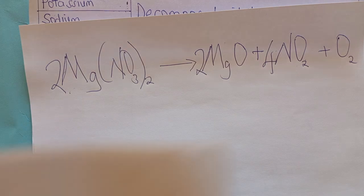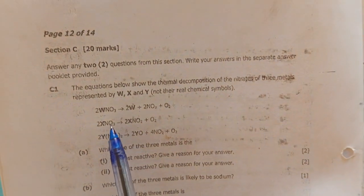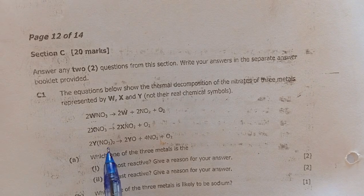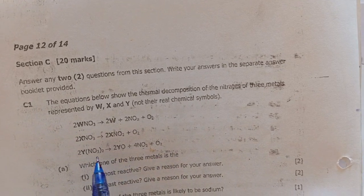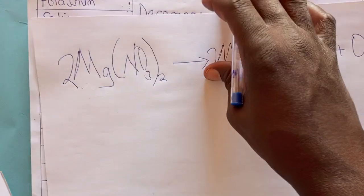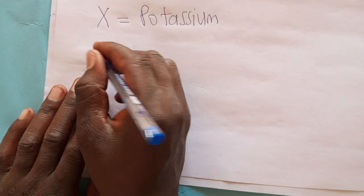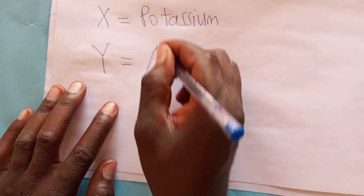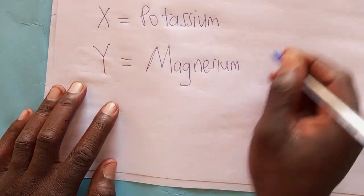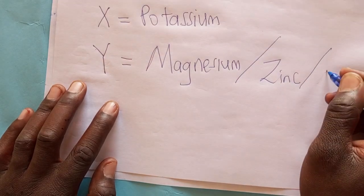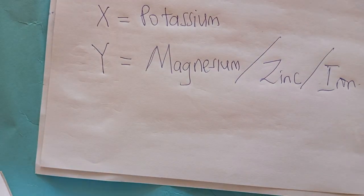So what it means is that if we go to the equation, which one decomposes in this manner? We realize that Y decomposes to Y oxide, nitrogen dioxide, and oxygen gas. So Y can be anything in that group — let's pick the one used in our example: Y is magnesium, Y can also be zinc, Y can also be iron.